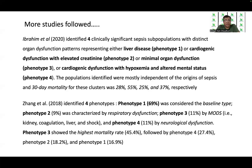The populations identified were mostly independent of the origins of sepsis, and the 30-day mortality for these clusters also varied. The highest mortality was seen with phenotype 2, that is, patients who had cardiogenic dysfunction with elevated creatinine. In another study by Zhang et al., there were also four phenotypes: phenotype 1 was considered the baseline type, phenotype 2 was characterized by respiratory dysfunction, phenotype 3 by multi-organ dysfunction syndrome involving primarily the kidney, coagulation, liver, and shock, and phenotype 4 with neurological dysfunction. Phenotype 1 was the commonest, but the mortality was highest in phenotype 3, the one with multi-organ dysfunction syndrome.